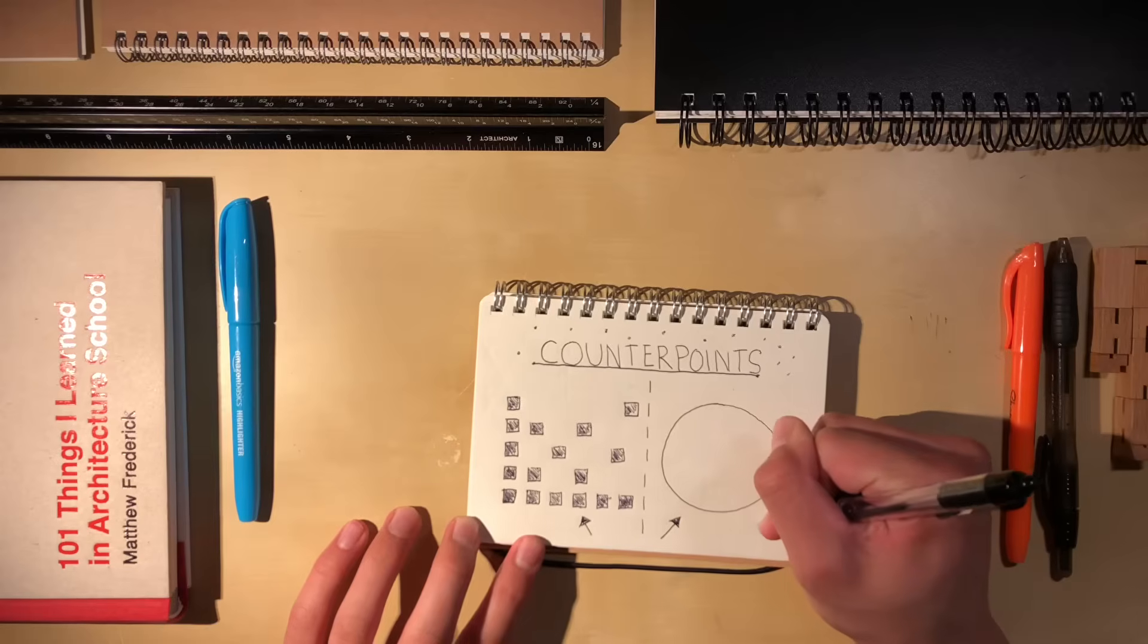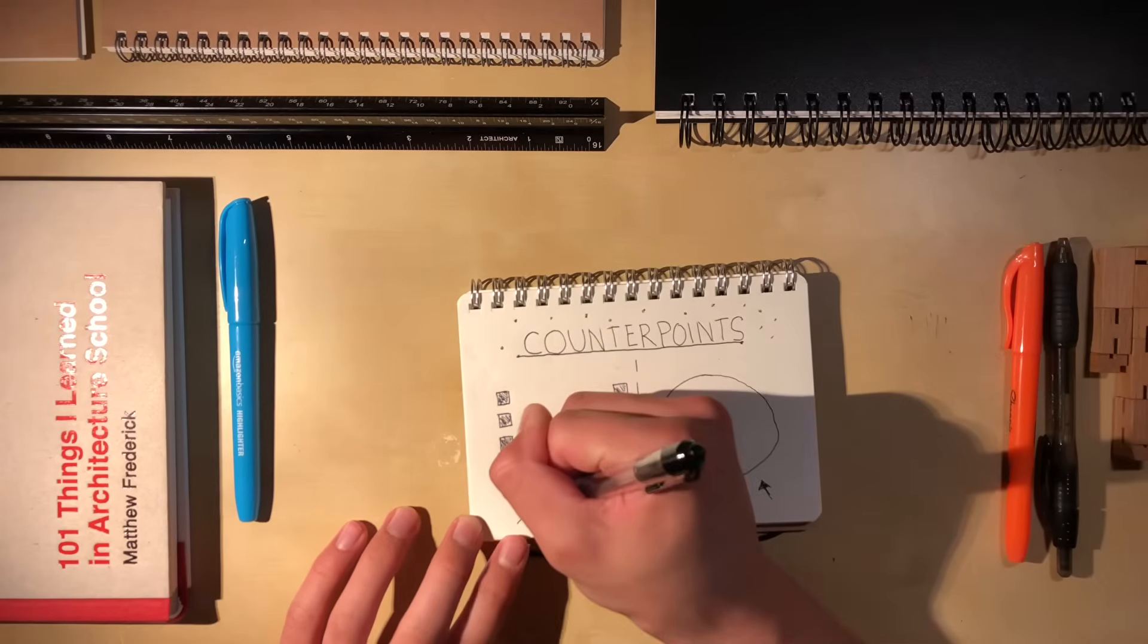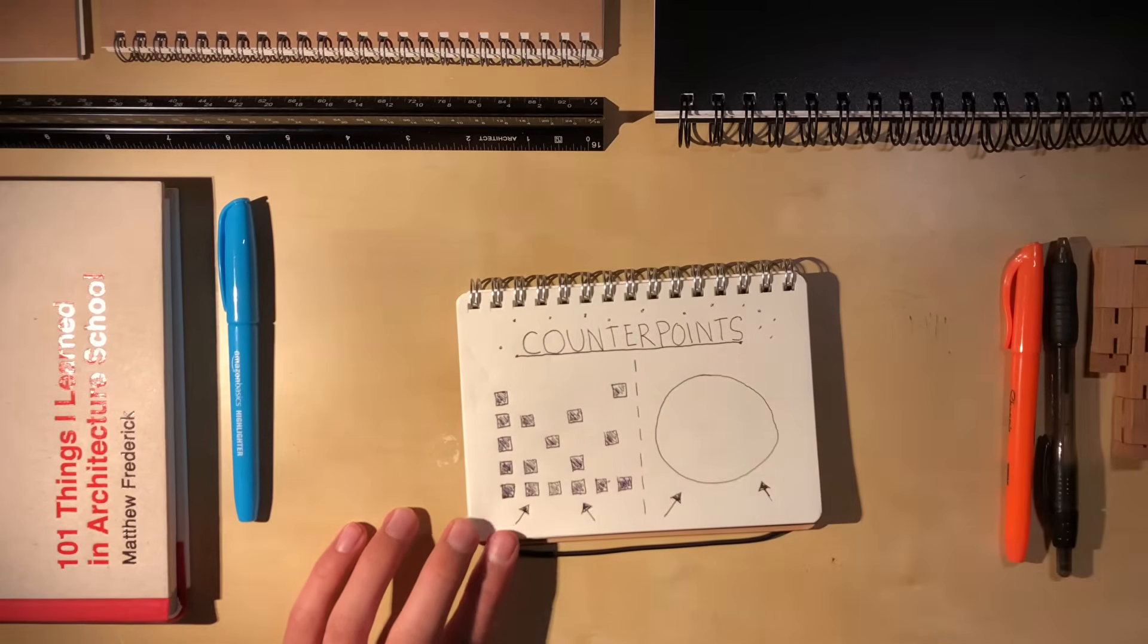Again, on the right-hand side is a circle. This circle is counterpointed by boxes on the left.